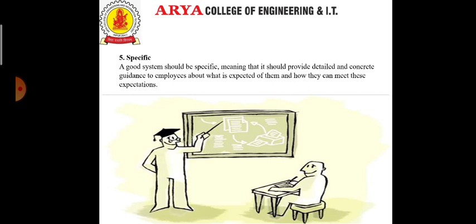The next characteristic is specificity. A good system should be specific, meaning it should provide detailed and concrete guidance to employees about what is expected of them and how they can meet those expectations. It should provide overall objectives and a clear review of the skills that are expected from the employees.